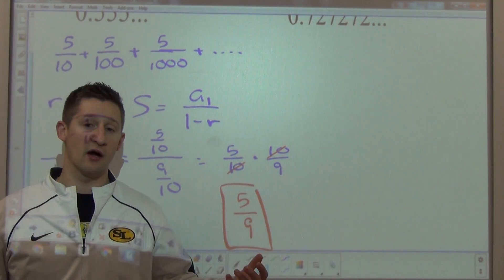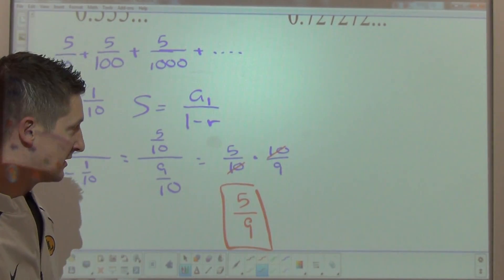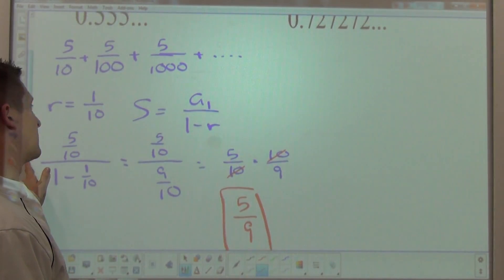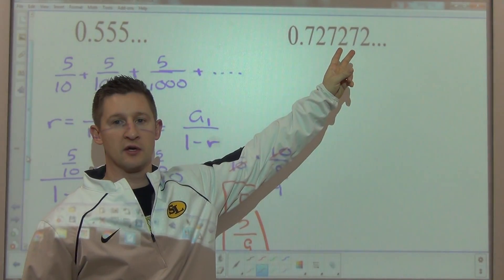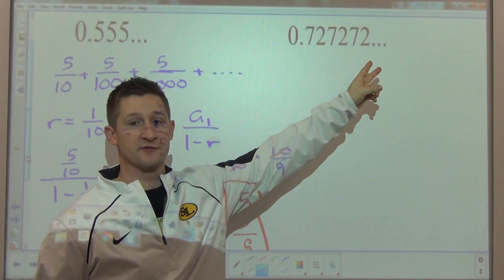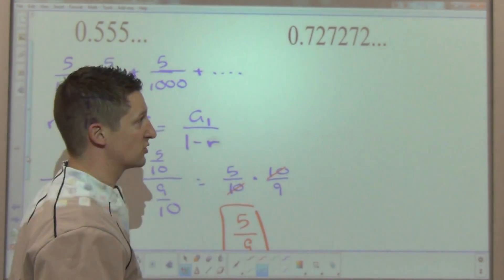If you were to type five-ninths into a calculator, five divided by nine, hit enter, you'd see 0.5 repeating. It matches up well. Now, with the next one, 0.72 repeating here, I have two place values that match up over and over again. So this one is going to be a similar process, but the common ratio is going to be different. I'll show you how.